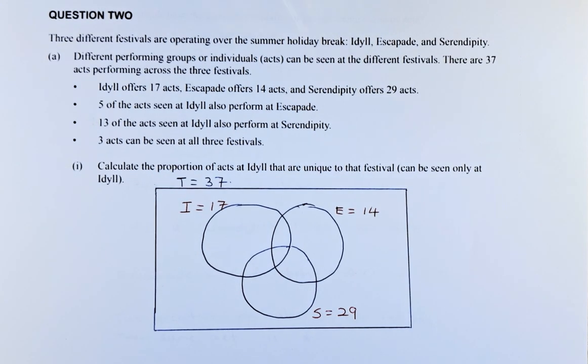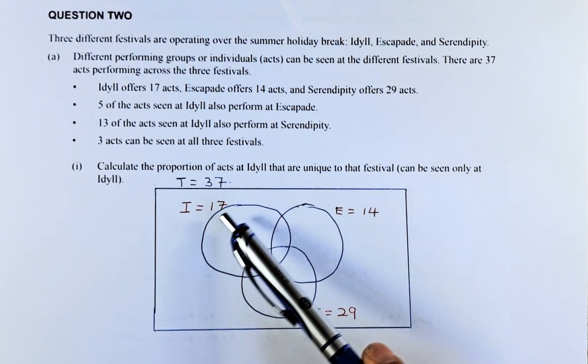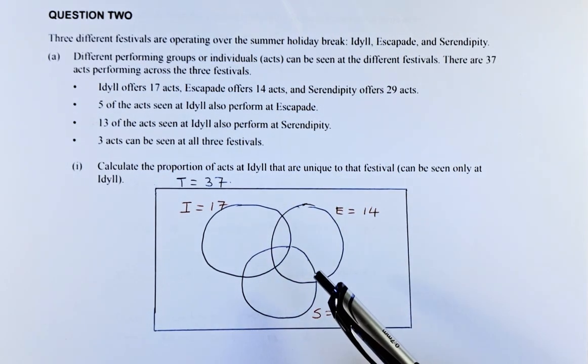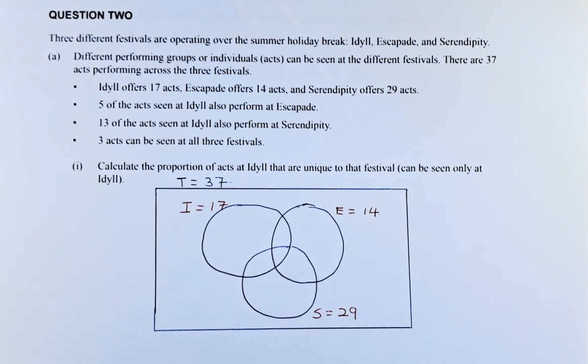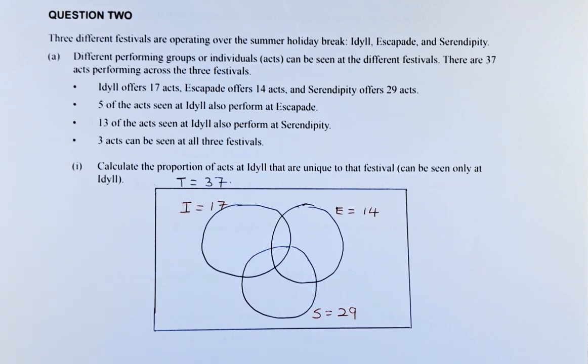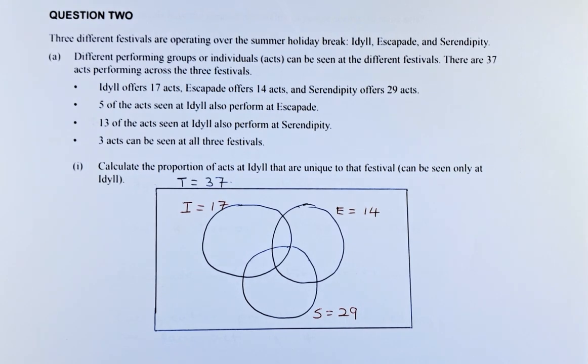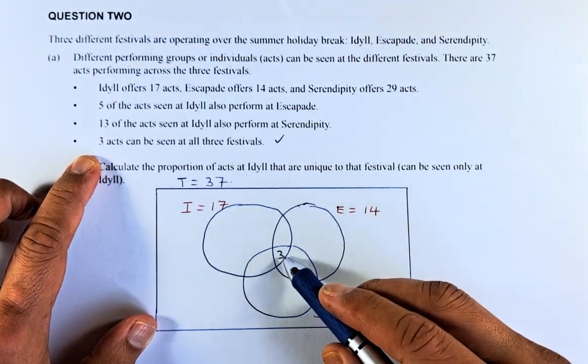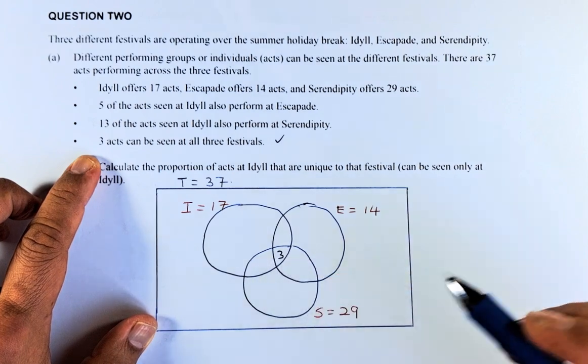Idyll provides 17 acts, Escapade 14 acts and Serendipity offers 29 acts. Five of the acts can also be seen at Idyll and Escapade, 13 at Idyll and Serendipity and 3 acts can be seen at all 3 festivals. So we are going to work this out in a Venn diagram and fill out all the numbers. We start with 3 here because 3 acts can be seen at all 3 festivals, so it appears in I, E and S.